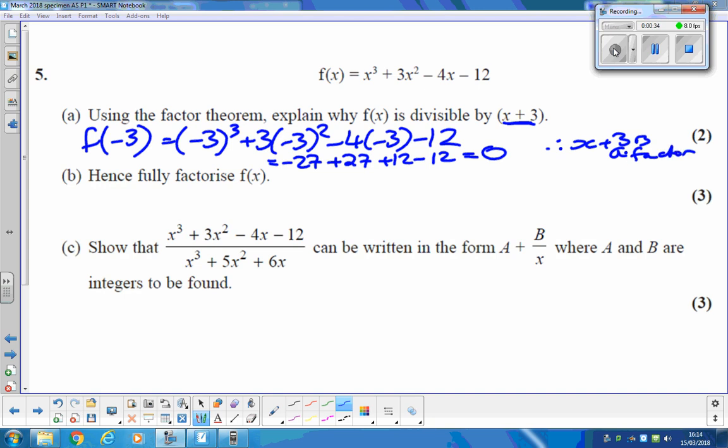Now, fully factorise it. So, we've got that it's x plus 3, and you can do a long divide, or you can, loads of different ways of doing this, to then get that we've got to have an x squared there, we're going to have a minus 4 on the end, and actually that's all we need. Fully factorise means that this thing here can be factorised as well. So, x plus 2, and x minus 2.